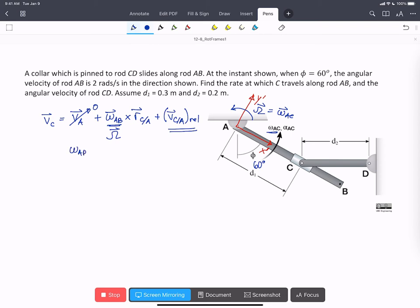So omega AB is going to be equal to 2 radians per second in the positive k-hat. r C with respect to A, we're actually going to make that k-hat prime because we're going to do everything with respect to our rotating frame. So r C with respect to A is going to be d1, which is 0.3 meters in the i-hat prime direction. So we can write that v C equals,